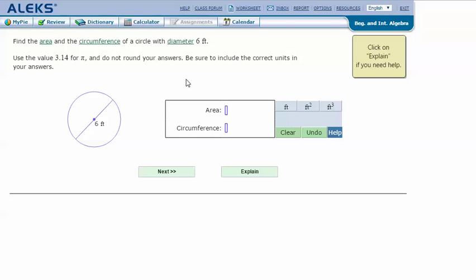Find the area and the circumference of a circle with the diameter of 6 feet. Use the value 3.14 for pi and do not round your answers. Be sure to include the correct units in your answers. Let's click explain.